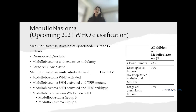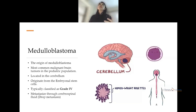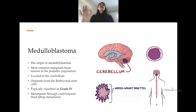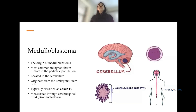Medulloblastoma: 'medull' means marrow, 'blastos' means germ, 'oma' means tumor — so this is a tumor originating from primitive germ cells located in the cerebellum. The cerebellum is the primary site, and more than 75 percent of tumors arise from the vermis. It is the most common malignant tumor in the pediatric population, though secondary to pilocytic astrocytoma.